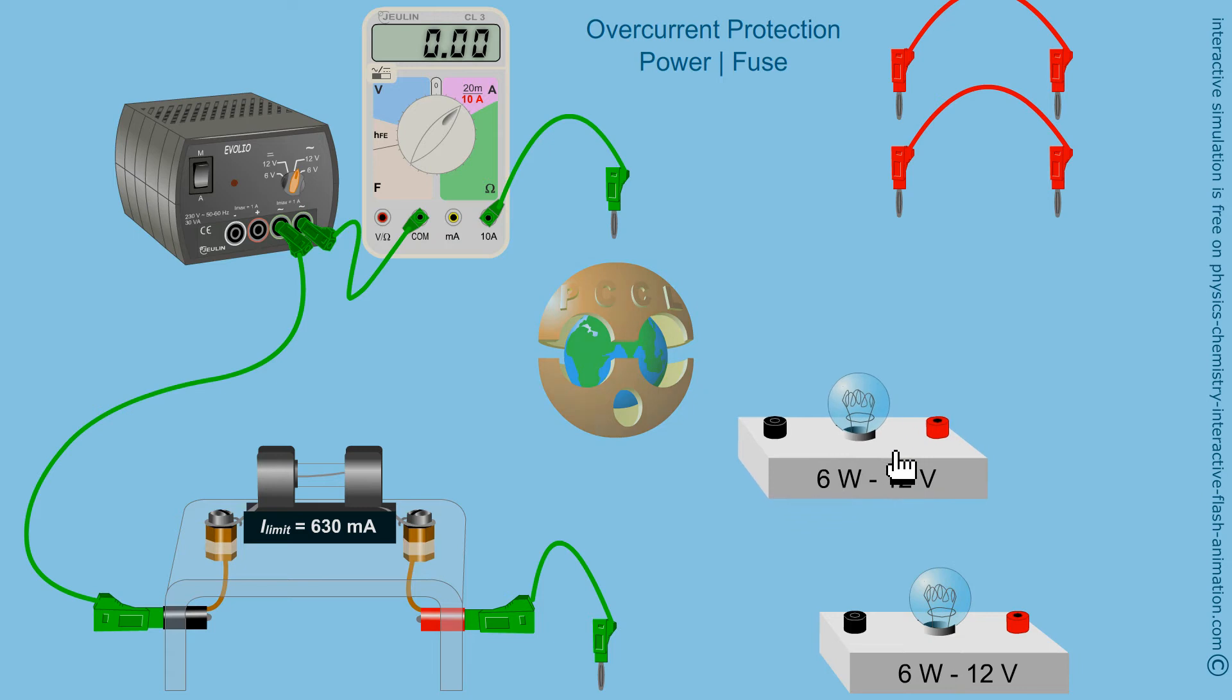The two bulbs are identical. On the base of each we read 6 watts. This is its nominal power. 12 volts is the nominal voltage.